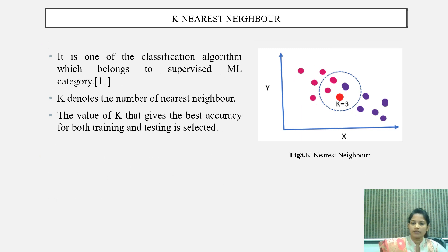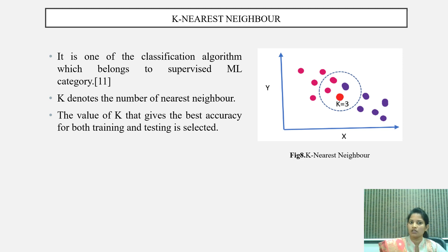K-nearest neighbor is also a supervised machine learning algorithm. It is used for classification as well as regression problems. In K-nearest neighbor, K denotes the number of nearest neighbors. The value of K which gives the best accuracy for both training and testing is selected. Normally, an odd number of K is used.